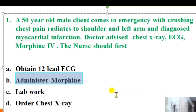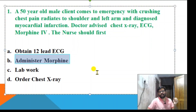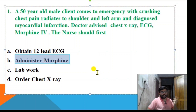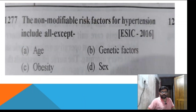In case of Morphine overdose, we need to monitor the respiratory rate. The antidote for Morphine is Naloxone. So Naloxone is the antidote of Morphine.